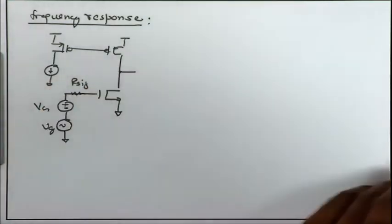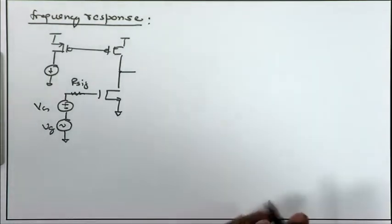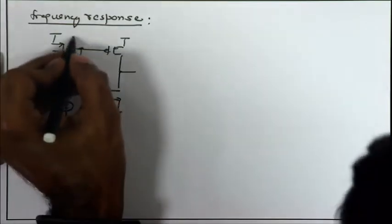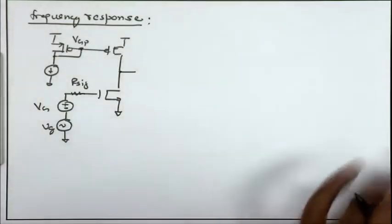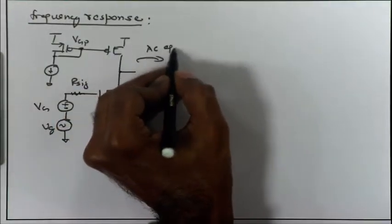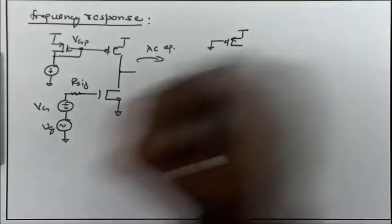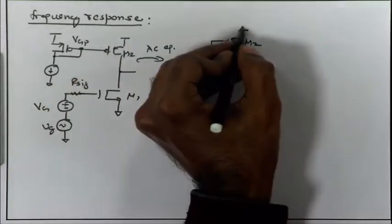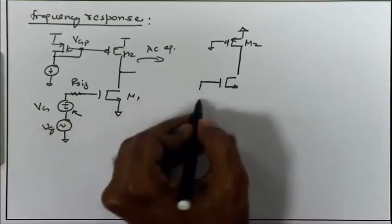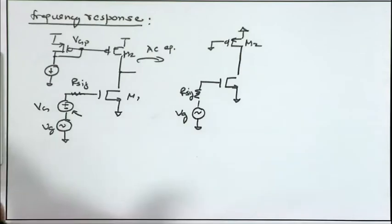Now, to find the high-frequency response, we use the shortcut of finding the RC time constants at the circuit nodes. In this circuit, V_GP is a constant DC value, so I can treat it as an AC ground. In the AC equivalent circuit, V_GP is at AC ground, the source of M1 and M2 is also at AC ground because they are connected to V_DD.